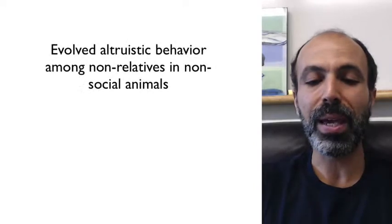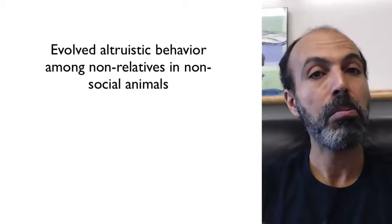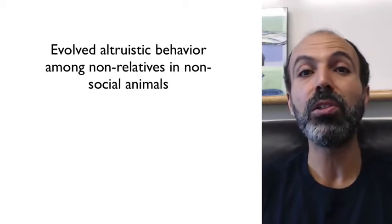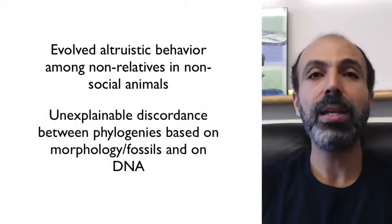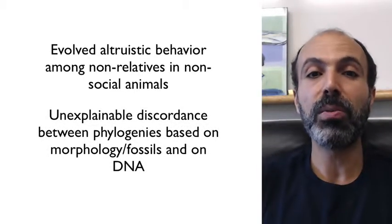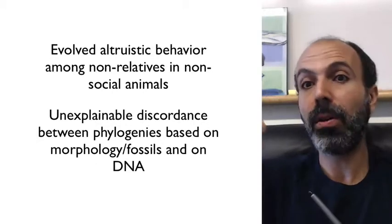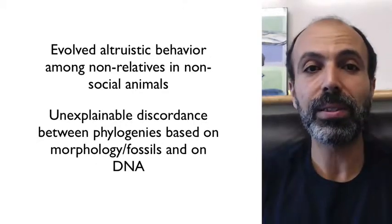Evolved altruistic behaviors among non-relatives in animals that don't exhibit social behavior would be a challenge for evolution by natural selection. And last but not least, any sort of discordance — any disagreement between relationships or phylogenies inferred using DNA versus inferred using morphology and fossils. We don't really see those, but those are observations that could, in theory, falsify common ancestry or evolution by natural selection.